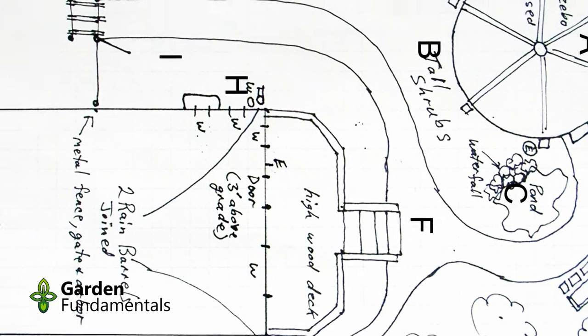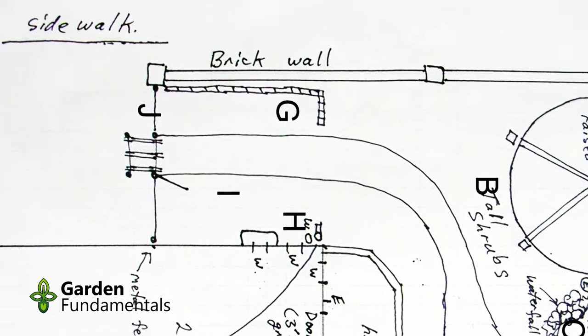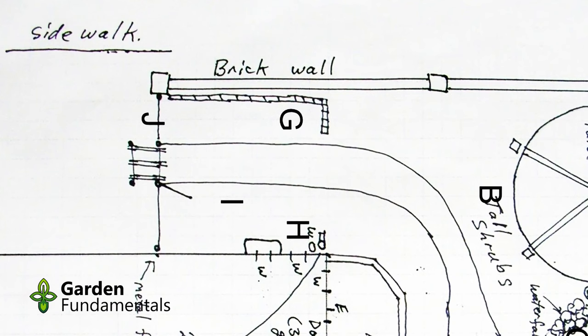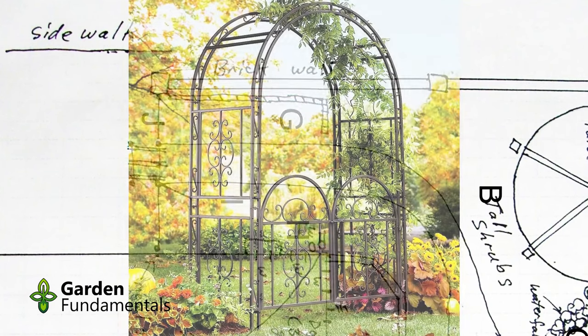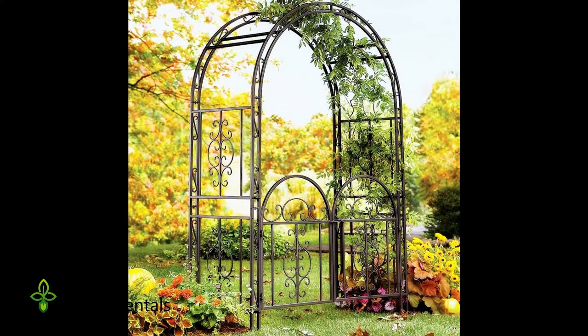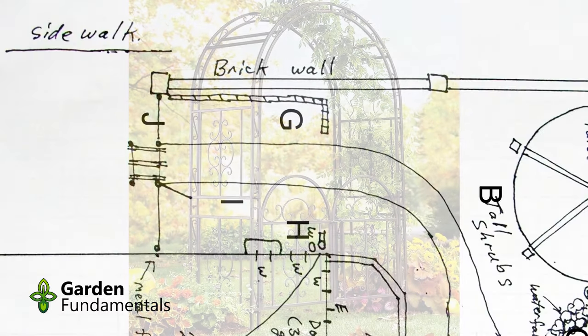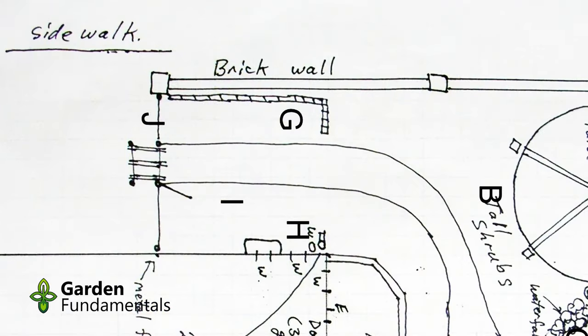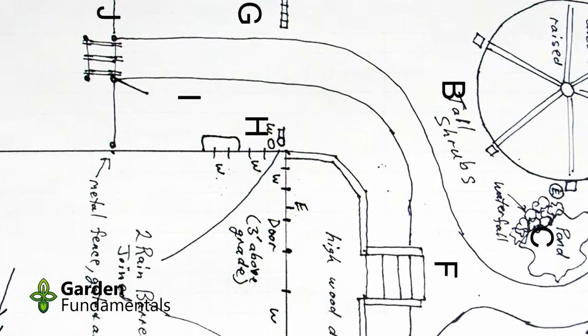The entrance to the garden will still use that wrought iron meadow fence, but I've decided to make it a little more interesting by adding a small arbor around the gate. It adds some interest to the property and gives me another place to grow vines. I love clematis, so this would be a perfect place for four clematis growing up the arbor.